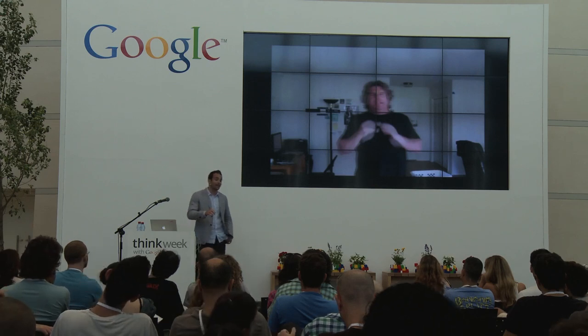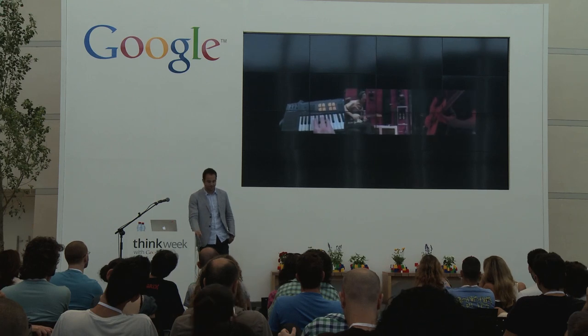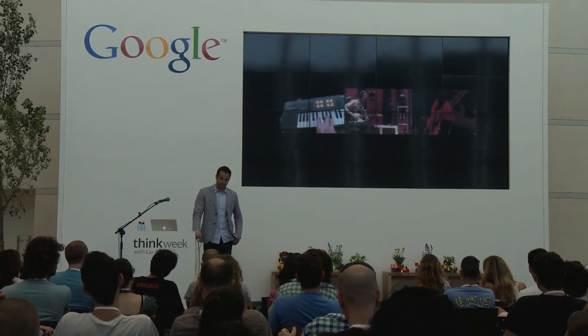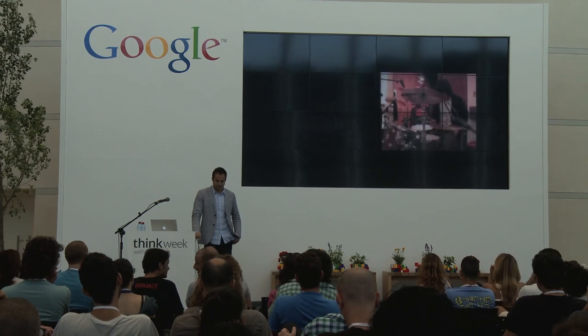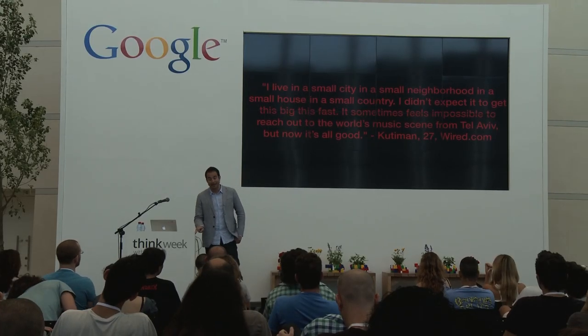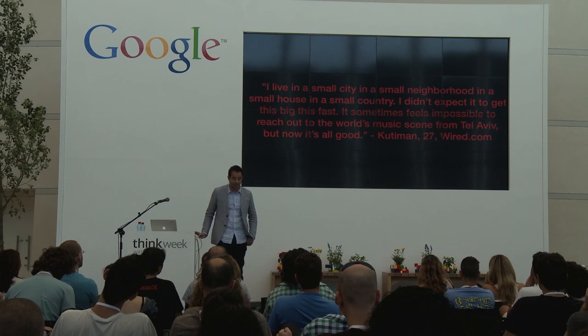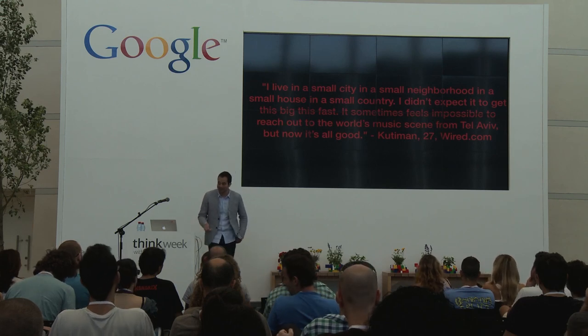The Funk Mashup, created by Kutiman — a local producer from Tel Aviv — is an entirely new form of music art. Because of his video, he became globally known. Maroon 5 reached out, sent him behind-the-scenes footage, and asked him to make something from it. Kutiman, whose real name is Ophir Kutiel, told Wired magazine: 'I live in a small city in a small neighborhood in a small house in a small country. I didn't expect it to get this big this fast. It sometimes feels impossible to reach out to the world's music scene from Tel Aviv, but now it's all good.'